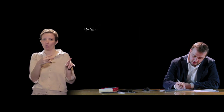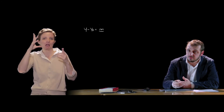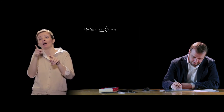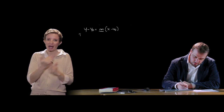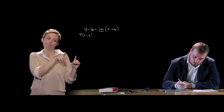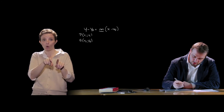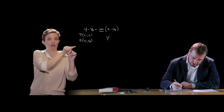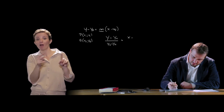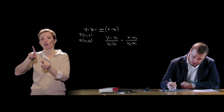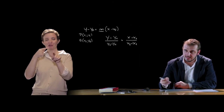La retta passante per un punto con coefficiente angolare noto ha equazione y - yP = m(x - xP), dove m è noto per qualche motivo legato all'esercizio. La retta passante per due punti P di coordinate (x1, y1) e Q di coordinate (x2, y2) ha equazione: (y - y1) / (y2 - y1) = (x - x1) / (x2 - x1).